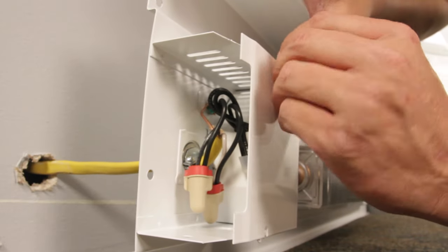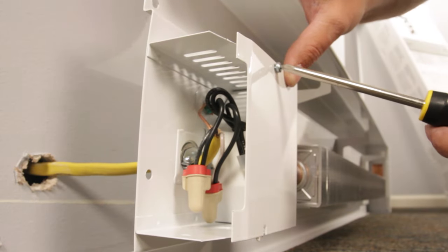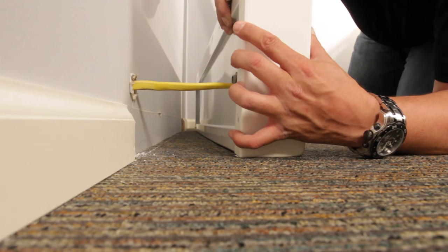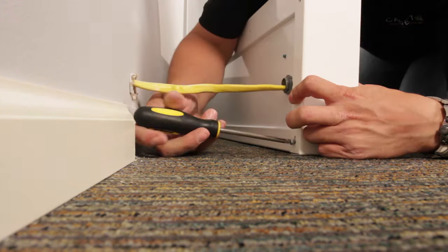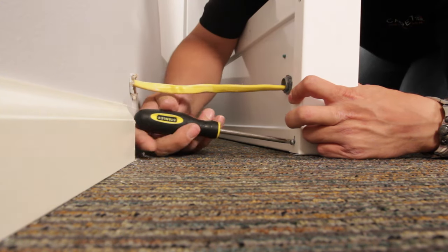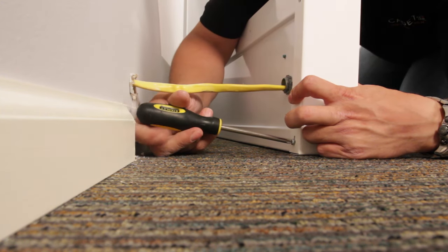Safely tuck all the wires into the wiring compartment and reattach the wiring box cover with the set screw. Now reattach the end plate with the screw and the spring clip. You may have to use a stubby screwdriver to get the screw installed.